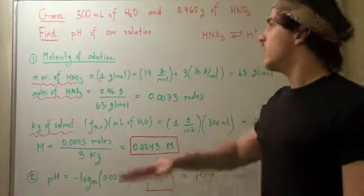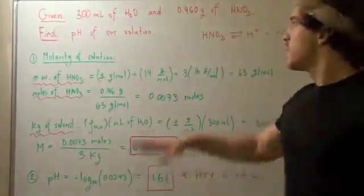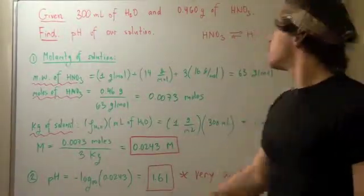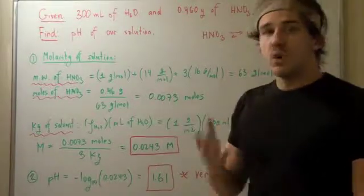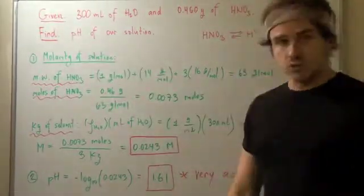In this example, we begin with 300 mLs of water and 0.46 grams of nitric acid. We want to find the pH of our solution.